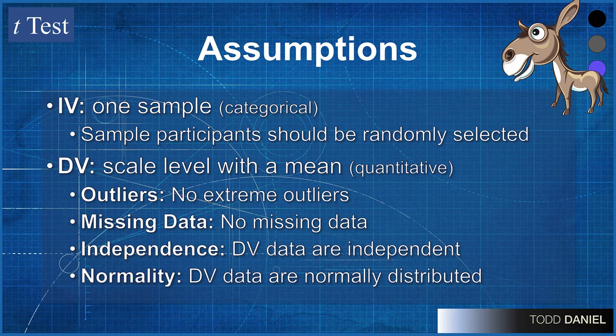Now that we know what test we're going to use, let's make sure that our data pass the assumptions for this t-test. The independent variable is a single sample. It's a categorical variable. In our case, we would call it bags of coffee. The sample participants should be randomly selected, which we know from the word problem, the bags of coffee were randomly selected for this test.